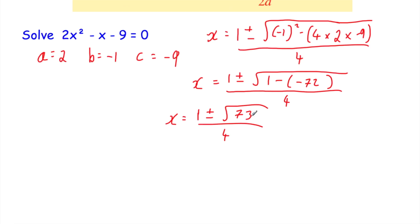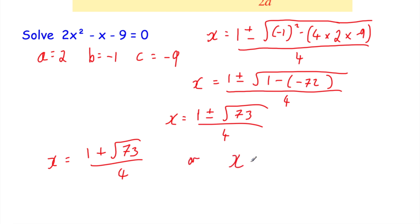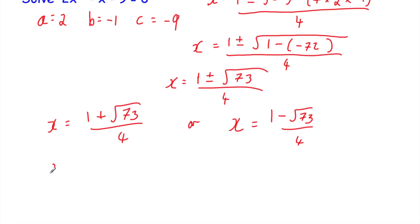At this point we've got 1 plus or minus the square root of 73. So we're going to have x equals 1 plus the square root of 73 divided by 4 — that gives us one answer — or x equals 1 minus the square root of 73 divided by 4, because we get two solutions. Now we just need to work these out on our calculator: 1 plus the square root of 73 divided by 4, and 1 minus the square root of 73 divided by 4.